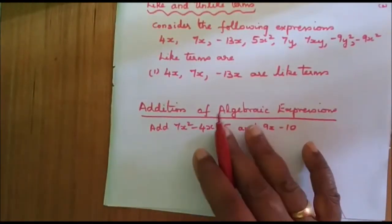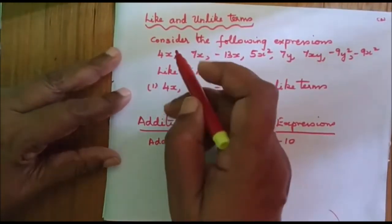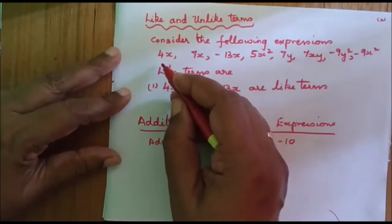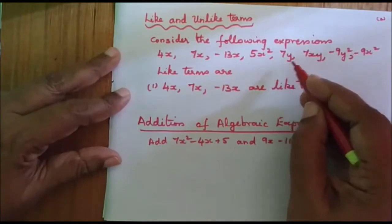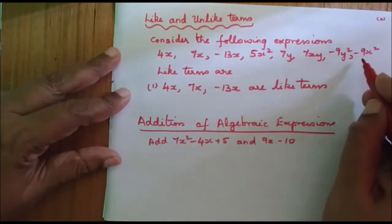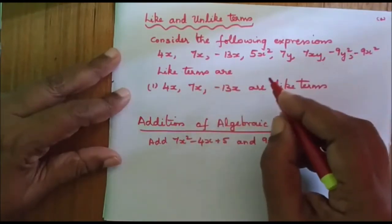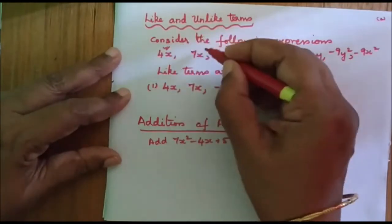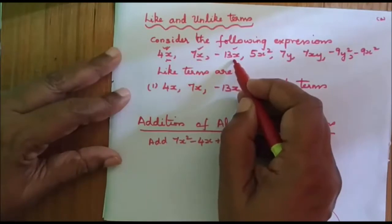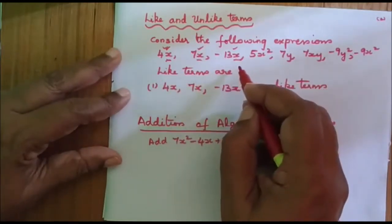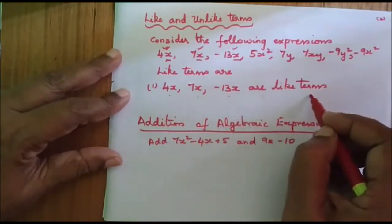Now we will see another concept: like and unlike terms. Consider the expressions 4x, 7x, minus 13x, 5x squared, 7y, 7xy, minus 9y squared, minus 9x squared. The like terms among these are 4x, 7x, and minus 13x — all have x as the variable, so these are like terms.